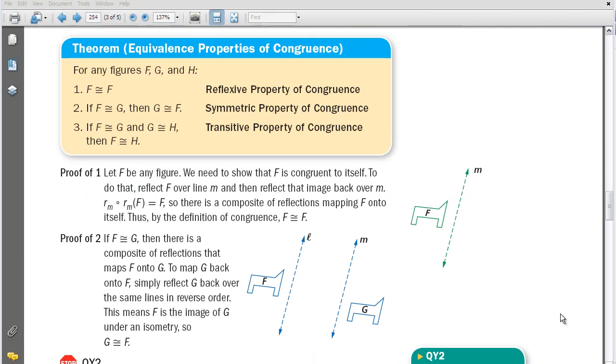As we study congruent figures, I'd like to also talk about some properties of congruence. Let's take a look at that first one, that's called the reflexive property. If I reflect F over line M and then reflect it back, F has to be congruent to F by definition of congruence.